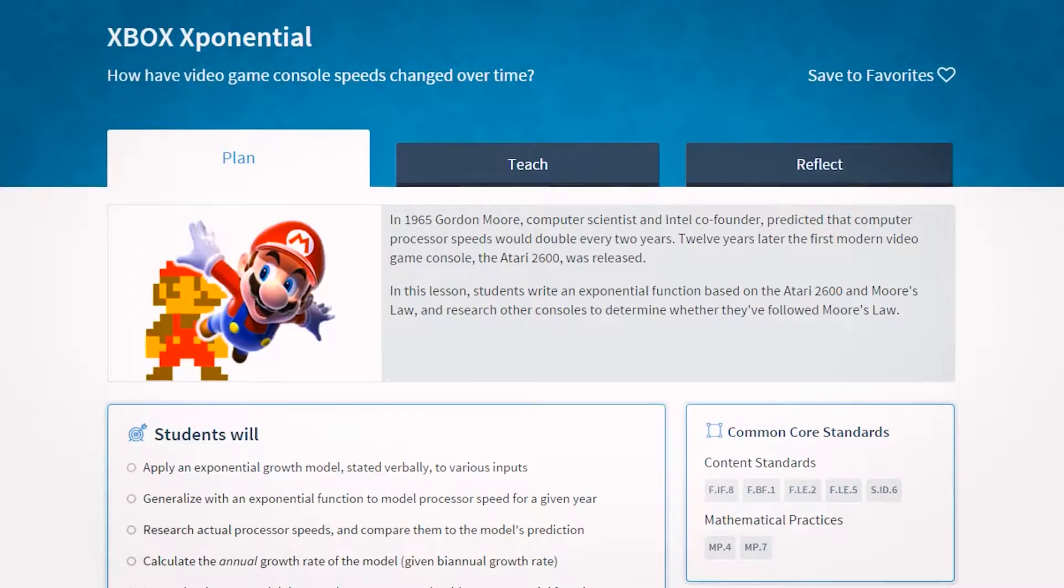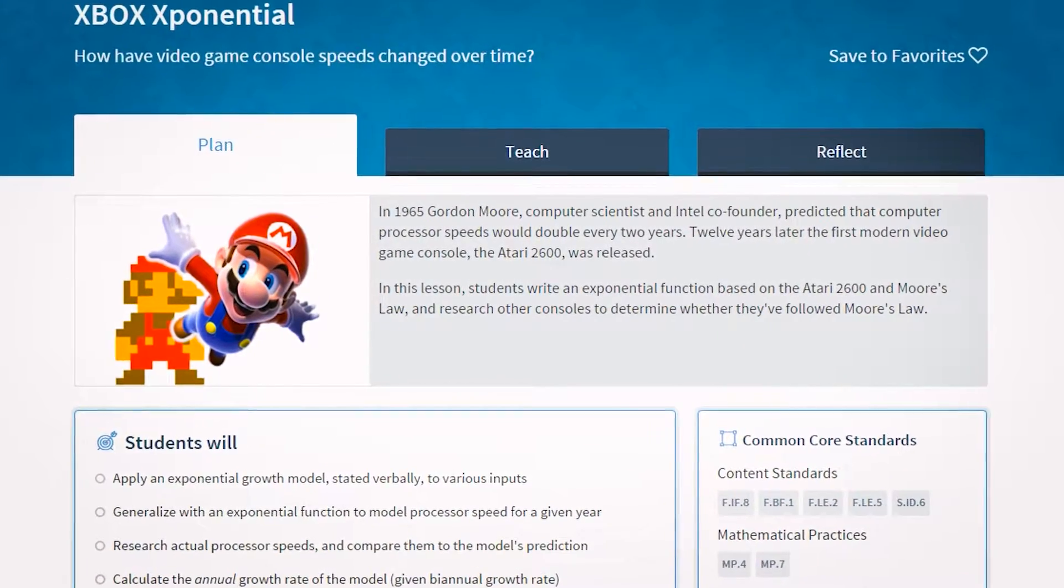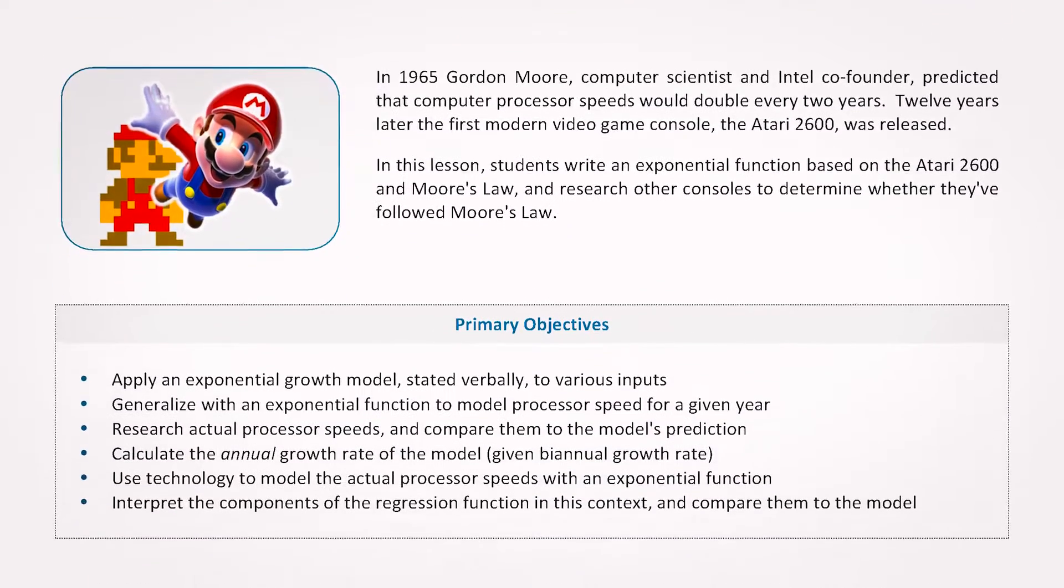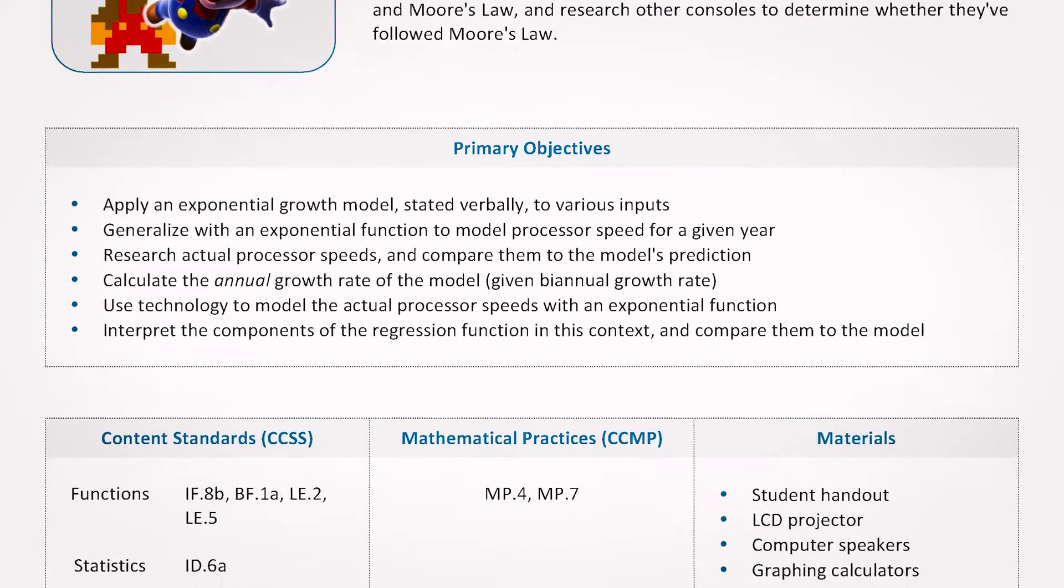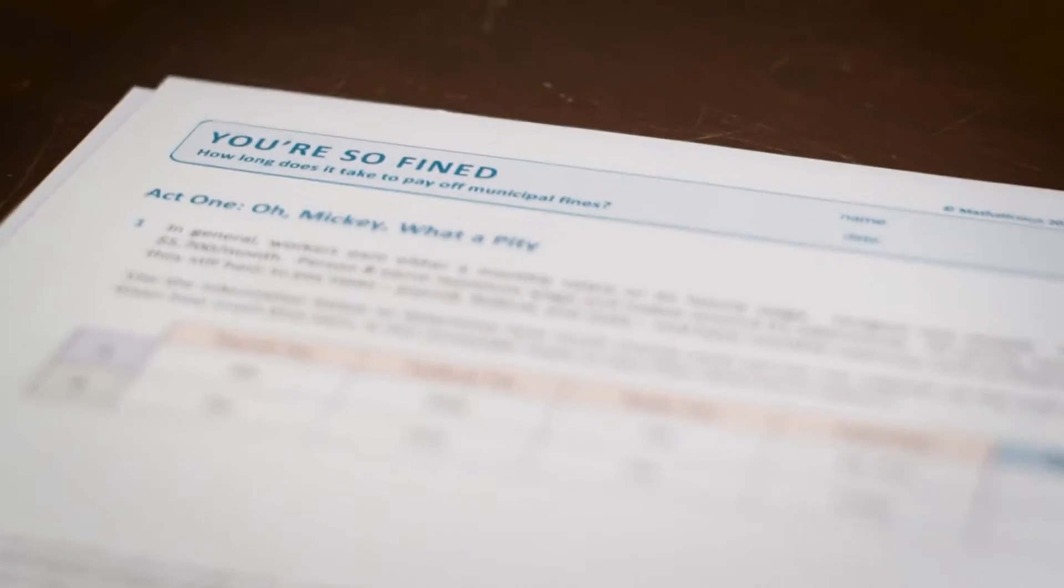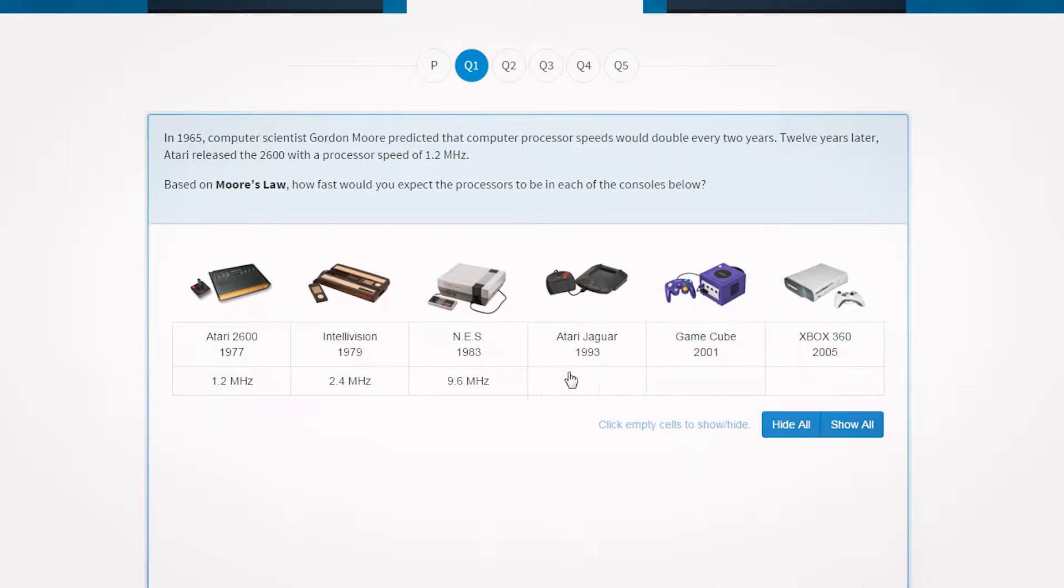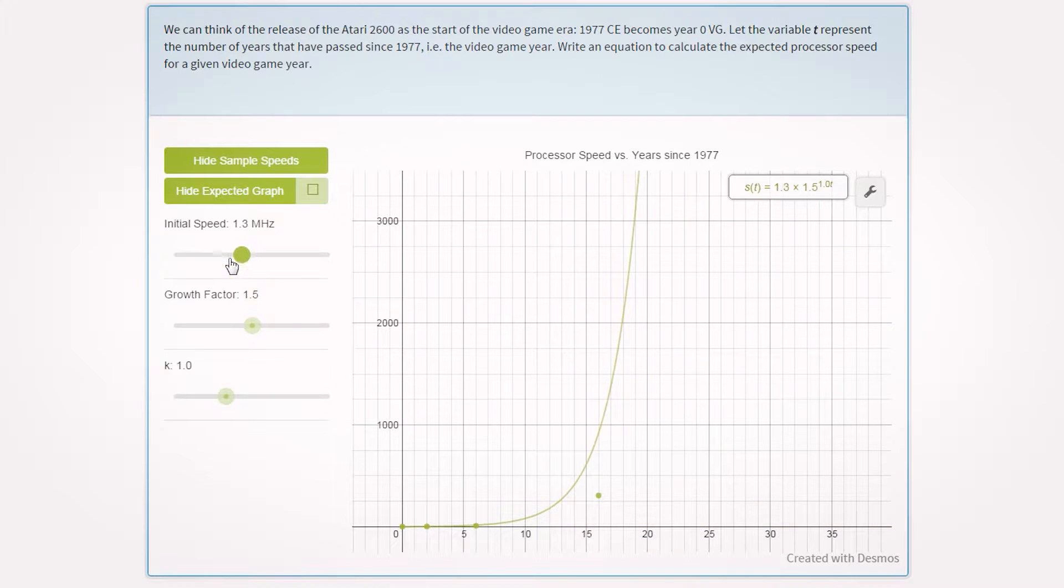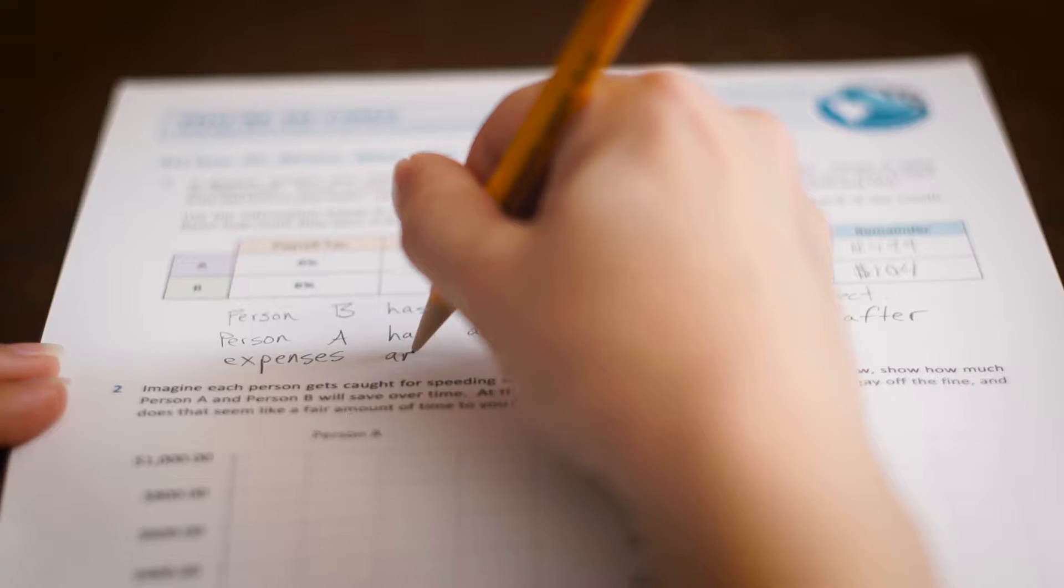Every lesson on Mathalicious.com includes three components: a lesson guide with common student misconceptions and tips for addressing them, a student handout that helps scaffold the narrative, and a set of interactive tools such as interactive graphs and tables that help students visualize mathematics in a new way.